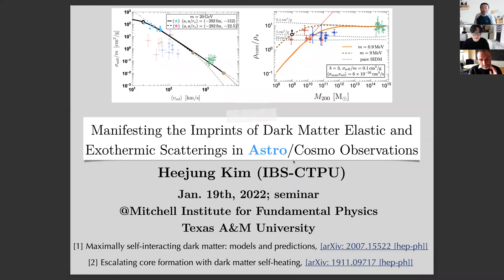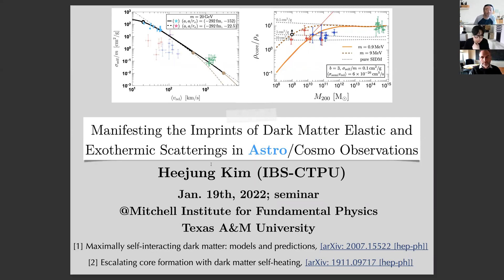I'm very happy to have Dr. Heejung Kim as our first speaker of this seminar for the spring semester. Heejung got his PhD degree from KAIST in Korea and is now a postdoc at IBS, Korea. Heejung is an expert on dark matter physics and cosmology, and today he's going to talk about interesting dark matter phenomenology in terms of astrophysics and cosmology.